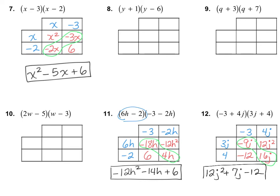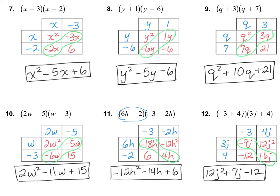I would like for you to go ahead and do numbers 8, 9, and 10 on your own. For number 8, I got y squared minus 5y minus 6. Number 9, q squared plus 10q plus 21. And number 10, 2w squared minus 11w plus 15. If you made any mistakes, see if you can find them.